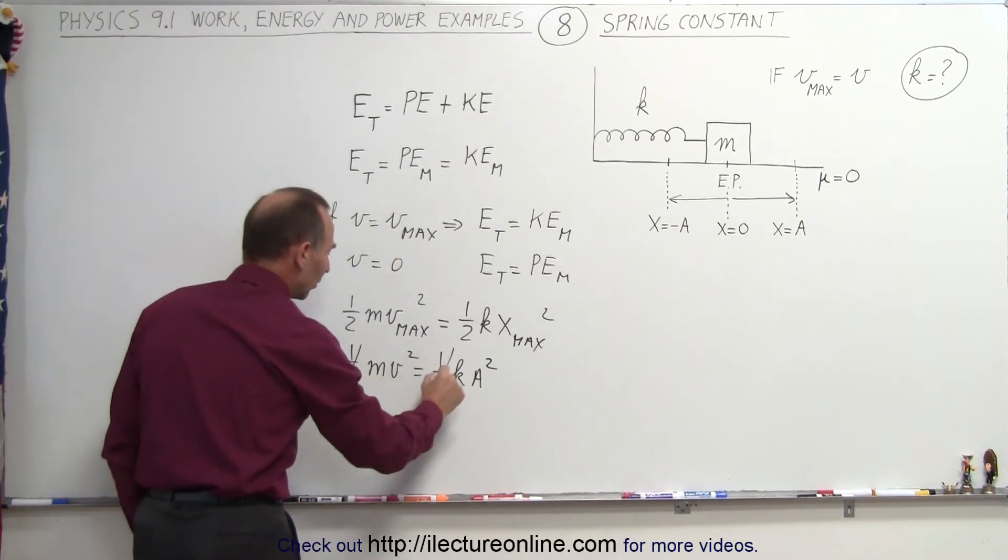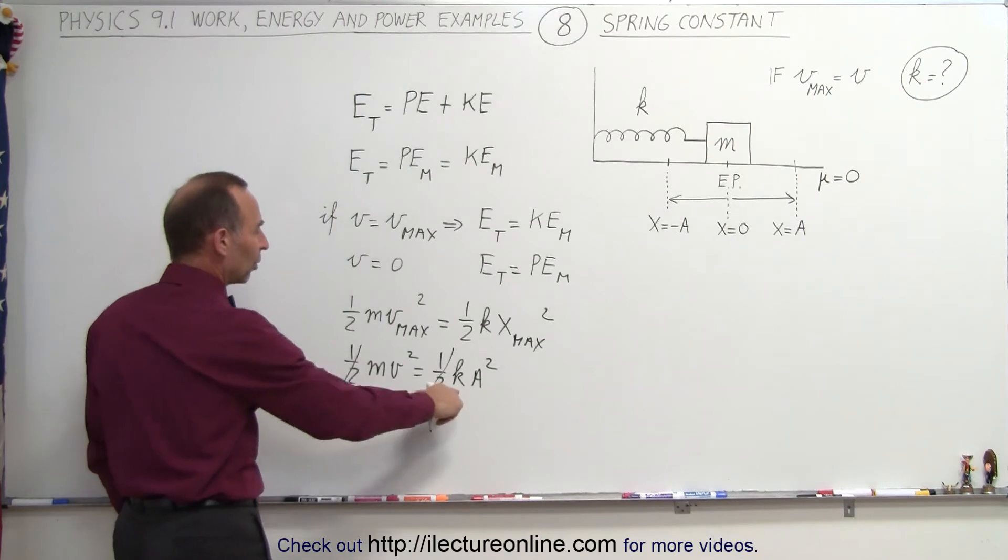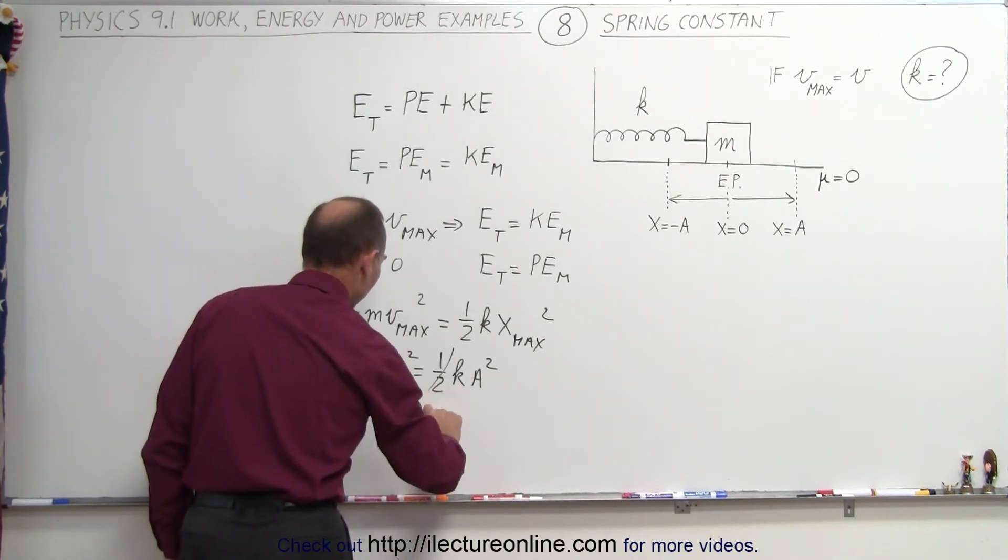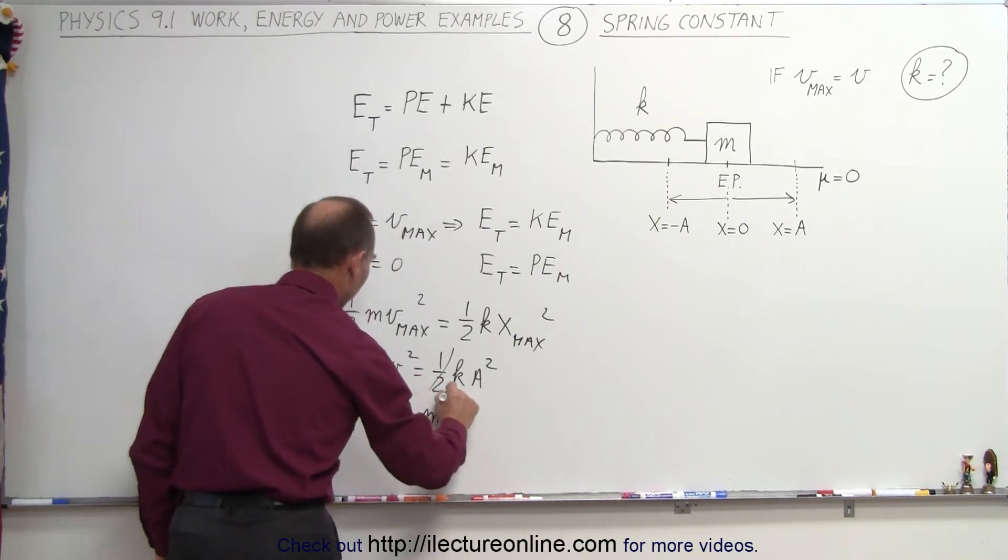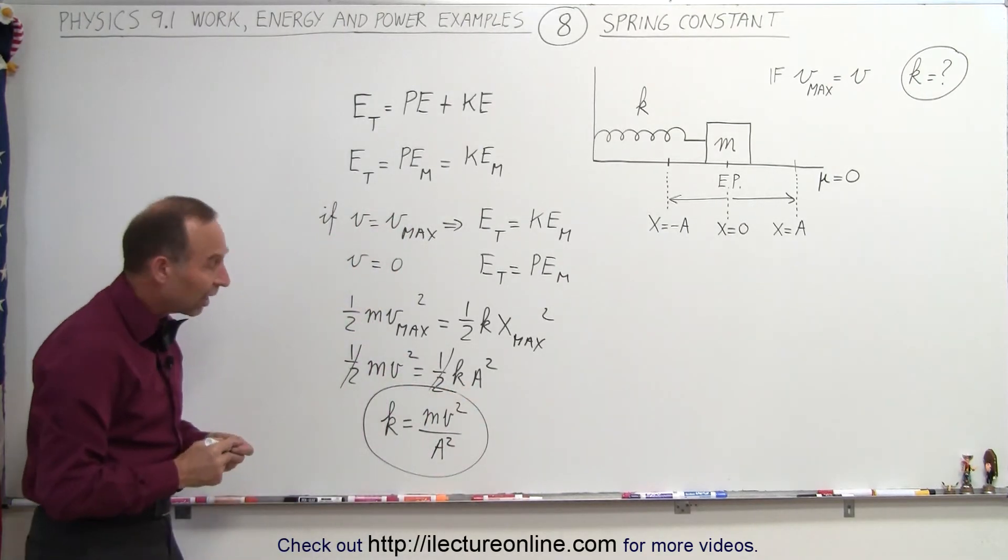Of course, we can get rid of the one-halves on both sides, and since we're looking for k, we can then say that k equals m v squared divided by A squared, and that's a nice expression for the spring constant k.